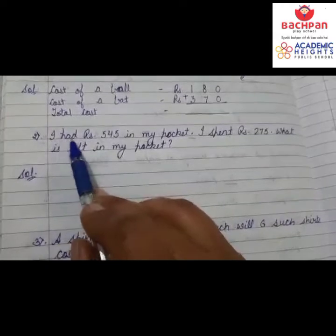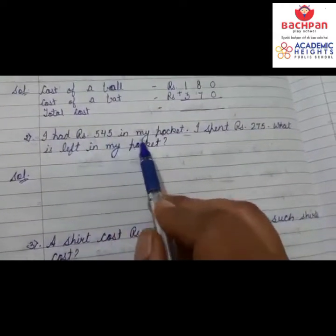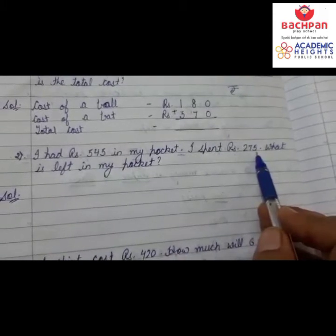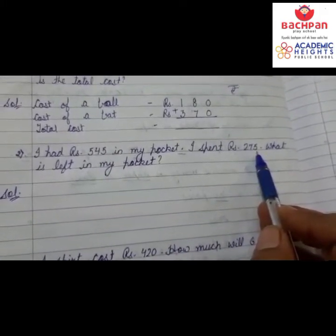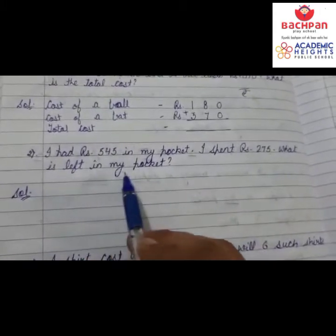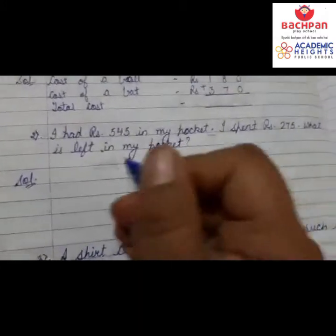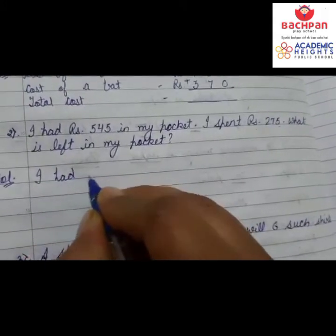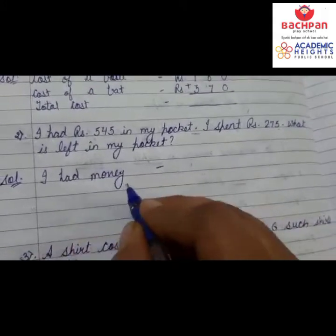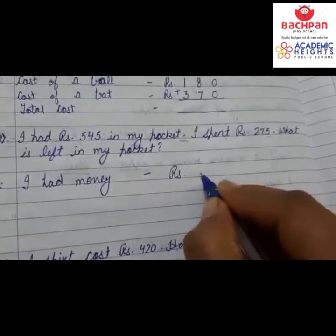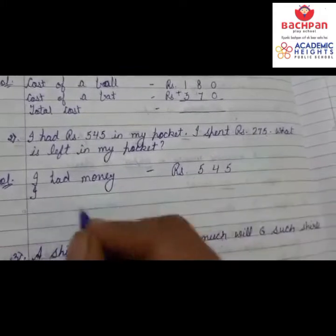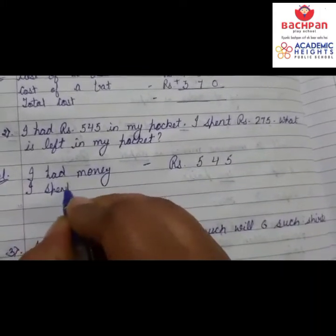Next question: I had rupees 545 in my pocket. I spent rupees 275 — means I spent it. What is left in my pocket? So how much money is left? In this question we will do subtraction. Let's make the statement. First line: I had money — how much money? Rupees 545.